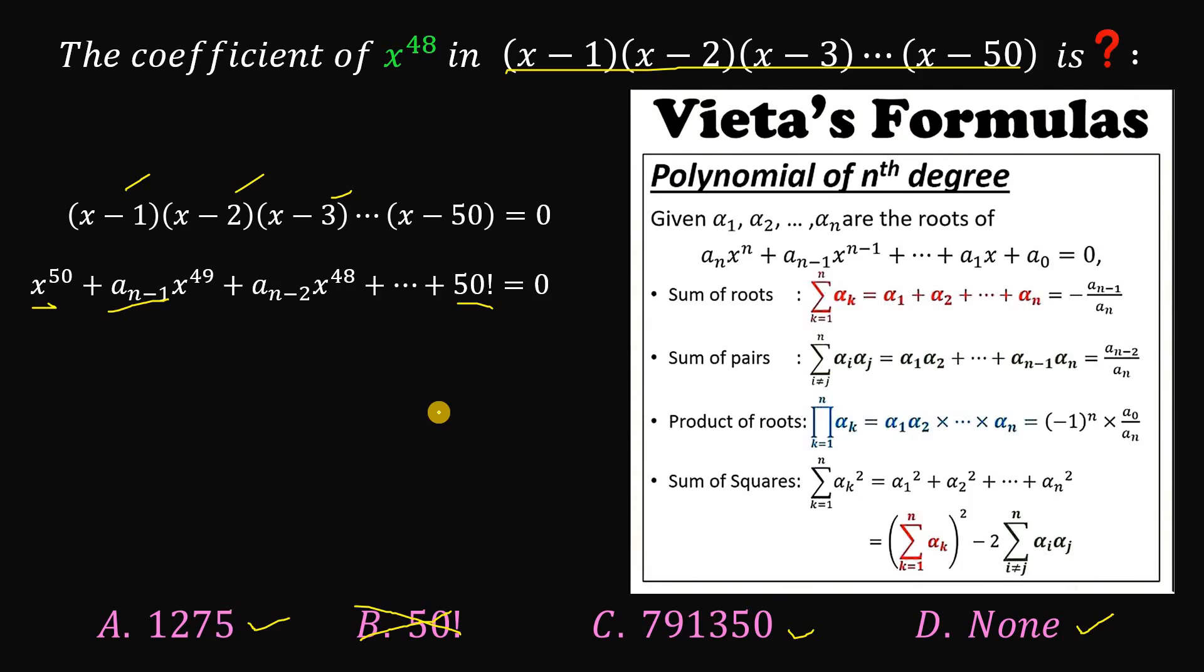And now from here, what we're going to do is take note that we want this expression right over here, which is A sub n minus 2, because this is the coefficient of x raised to the power of 48. And take note, this A sub n minus 2 is what we call the sum of pairs of the roots.